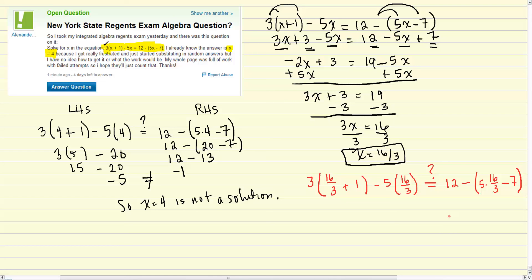Okay, so same deal. This is the left-hand side. This is the right-hand side. Whatever we get on the left-hand side, we have to get on the right-hand side. Otherwise, x equals 16 thirds is not a correct answer. So, let's see. Let's just distribute this.